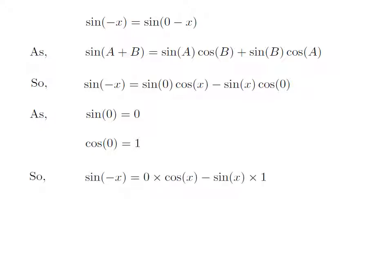So, replacing the value of sine of 0 and cosine of 0 in the above expression of sine of minus x gives us sine of minus x is equal to 0 into cosine of x minus sine of x into 1.